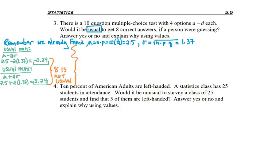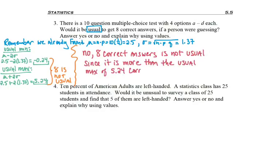So 8 is not usual. We wanted to know if it was common to get 8, and 8 is not in that range. So we answer: No, 8 correct answers is not usual since it is more than the usual maximum of 5.24 correct answers.